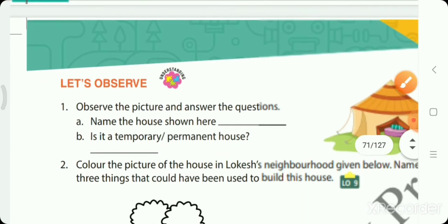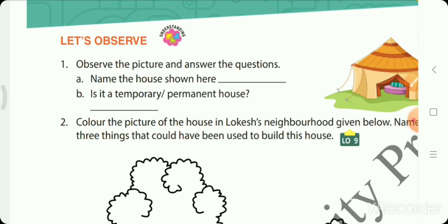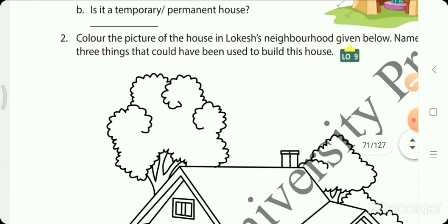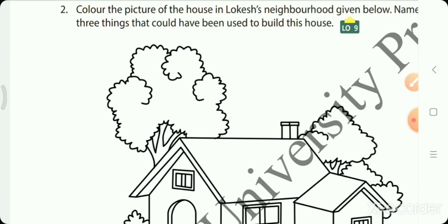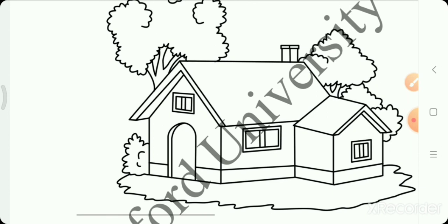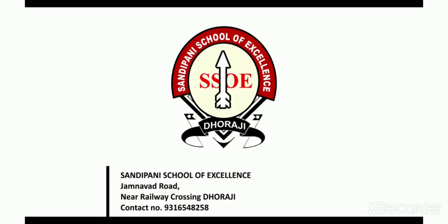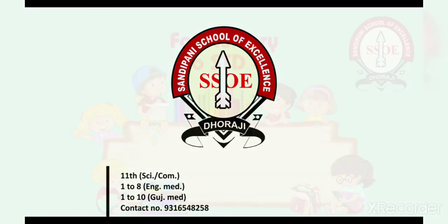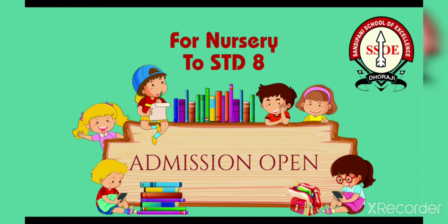Now observe the picture and answer the questions. Name the house - it's a tent. Is it temporary or permanent? Temporary. This is your favorite work - color it. Okay students, that's all for today. Thank you.